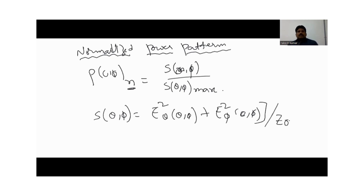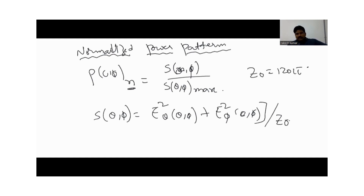This is the value of S(θ,φ), where Z₀ is the intrinsic impedance, equal to 120π. And S(θ,φ)_max is the maximum value of S. The units are watts per meter square. This is the definition of the normalized power pattern.